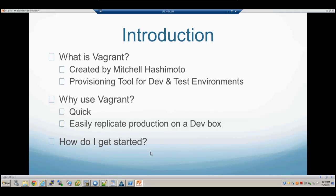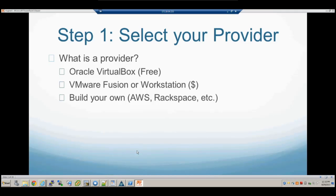He is a developer himself, so he asked: how can I make my development environment the same as my production environment? His solution was to create a small VM automatically, so he could run the same provisioning scripts that IT ops people run in production on that VM and develop against it. That's why we use Vagrant — it's quick and easy to replicate production on your dev box.